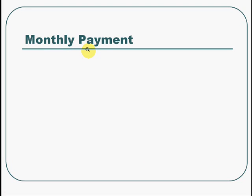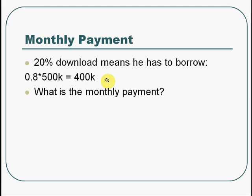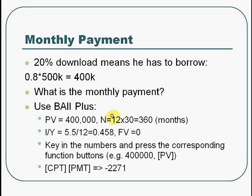For this type of question, the most important thing is to calculate the monthly payment first. A 20% down payment means he has to borrow 80% of the value of the house, so it will be $400k. Using the BA2 Plus calculator, we can key in the following data. The first thing is present value — he borrowed $400k, so this is a cash inflow of $400k. This is a 30-year loan paid monthly, so it is 360 periods.